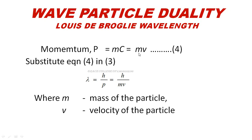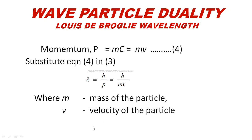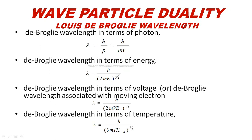Substituting momentum P for MC in equation 3, Lambda is equal to H by P, or we can write it as H by MV, where M is the mass of the particle and V is the velocity of the particle. The de Broglie wavelength can be written in terms of photon, energy, voltage, and temperature.